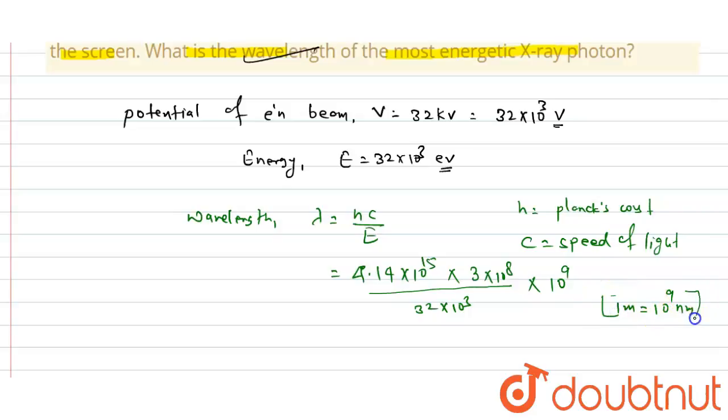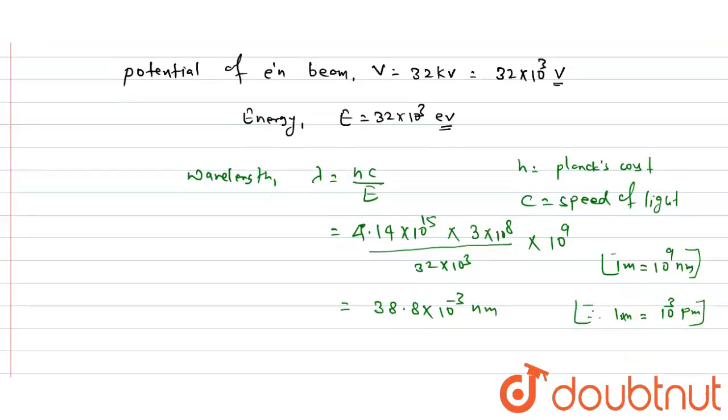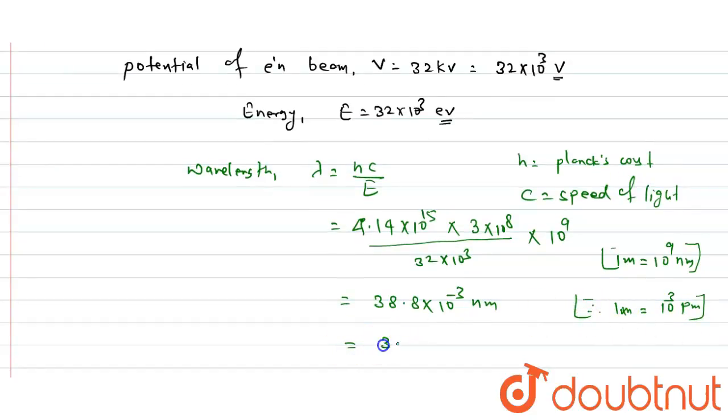So it is multiplied by this quantity, and on solving we get here that is 38.8 × 10⁻³ nanometer. And we also know that 1 nanometer is equal to 10³ picometer, so it is multiplied by 10³ and it comes out 38.8 picometer.